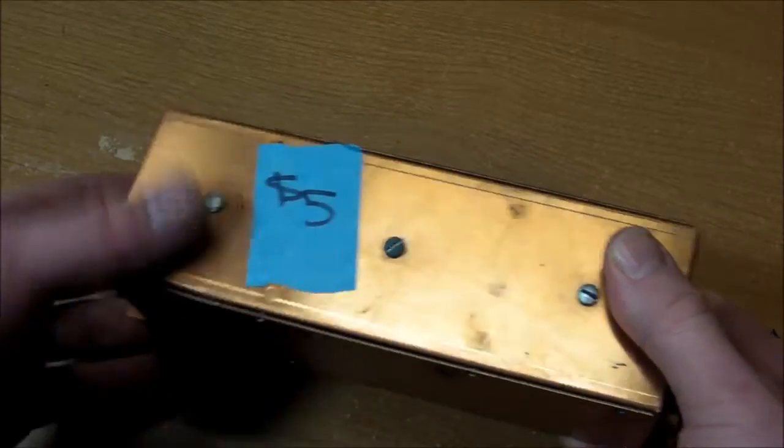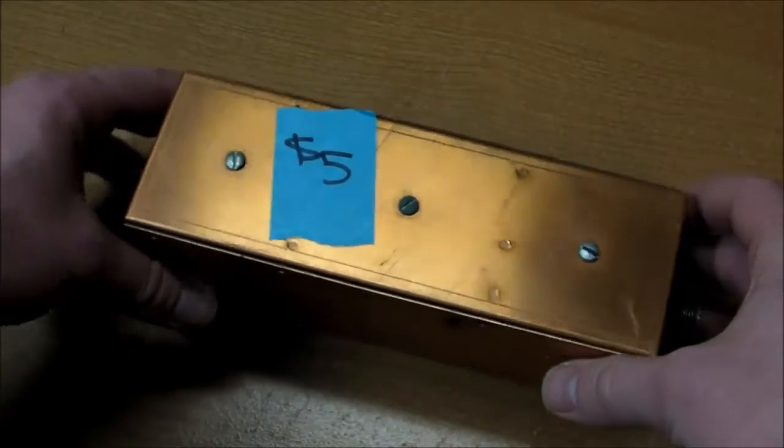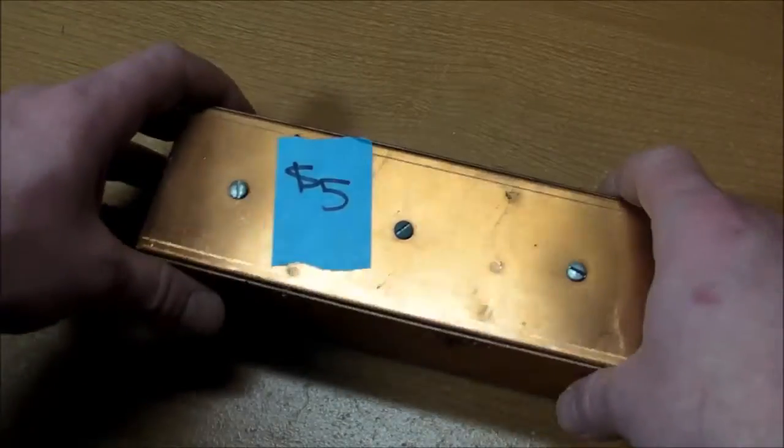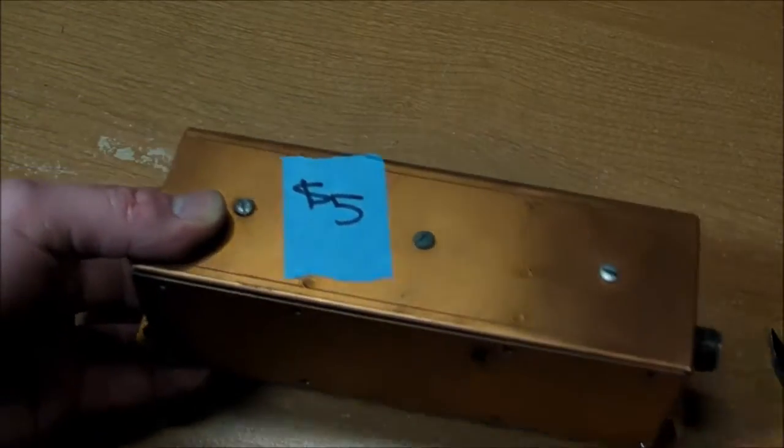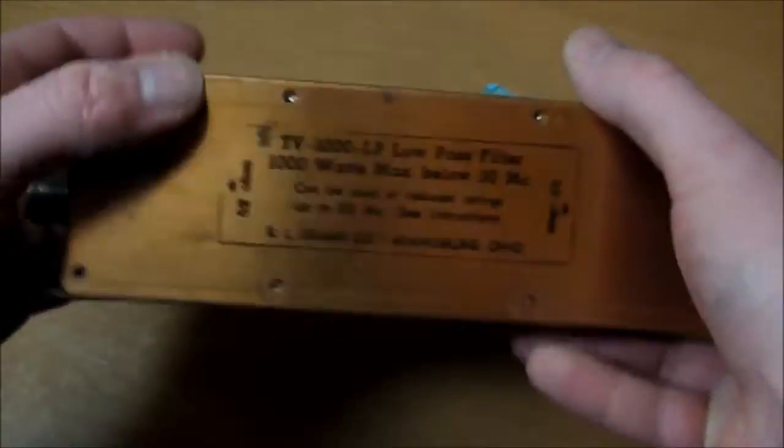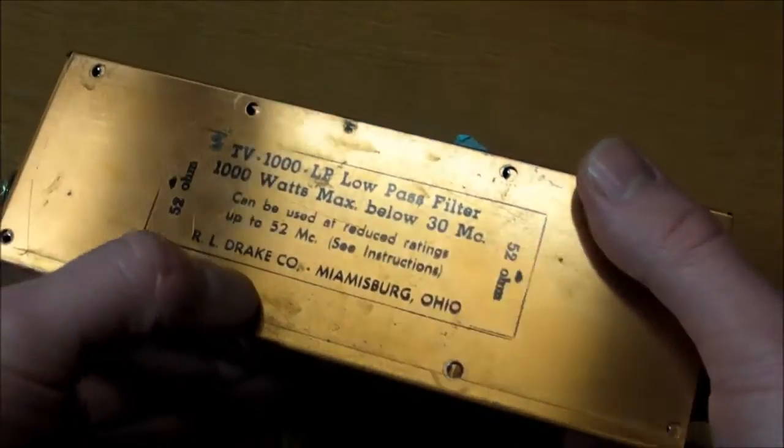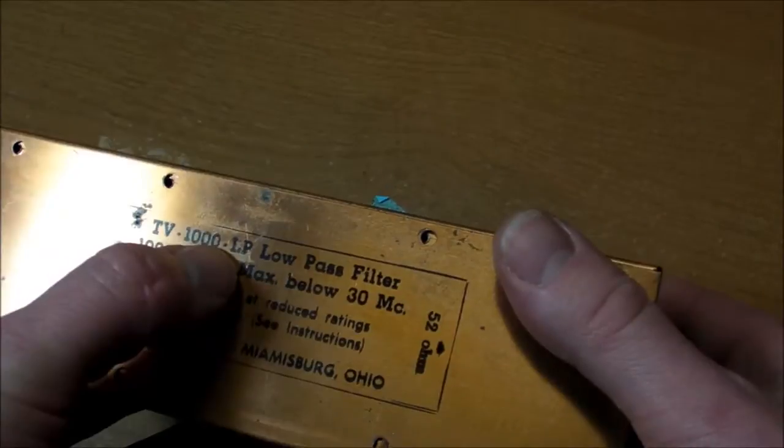He'd have to put it on a larger piece of wood too, so it has extra stability when he's got these big long lamp fixtures sticking up out of it. But anyway, what it is, is the RL Drake Company TV1000LP low-pass filter.